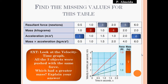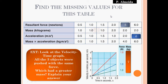For questions one and six, I want acceleration — that's force over mass. So 0.5 over 1 gives 0.5. For question two, I want mass — force over acceleration: 1 over 1 gives 1. For number three, I want resultant force — mass times acceleration: 1 times 1.5 gives 1.5. For number four, mass equals force over acceleration: 2 over 1 gives 2. For number five, resultant force equals mass times acceleration: 2 times 2 gives 4, which matches the mass-times-acceleration column. For number six, acceleration equals force over mass: 6 over 2 gives 3.